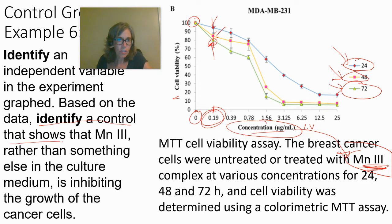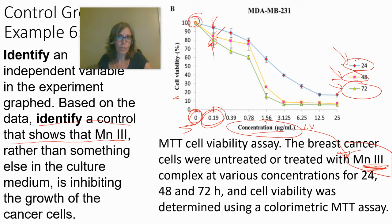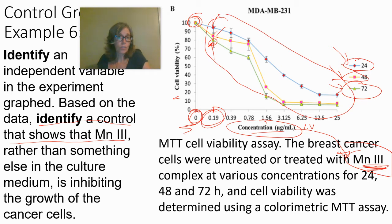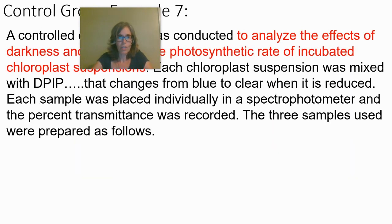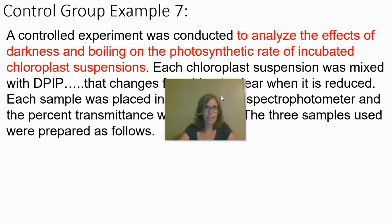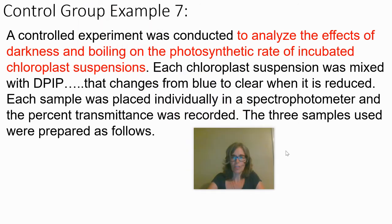The control is when you have zero micrograms per mL of the drug and get 100% viability. The experimental cells are all the others, and their viability is reduced in every case.